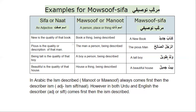In the third example, waladun tavilun — a tall boy. Both of these ism are nakkira and singular. A boy is the ism that is described, the ism zaat, and tavilun is the quality or description of that boy.